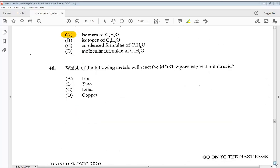Question 46. Which of the following metals will react the most vigorously with dilute acid? A iron, B zinc, C lead, or D copper. The answer is B zinc.